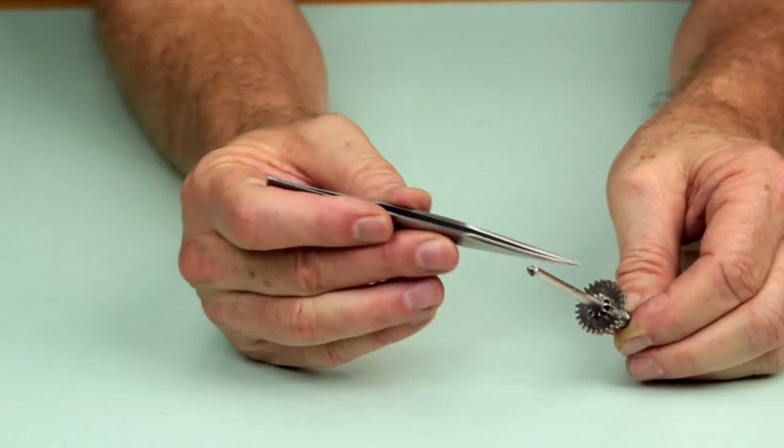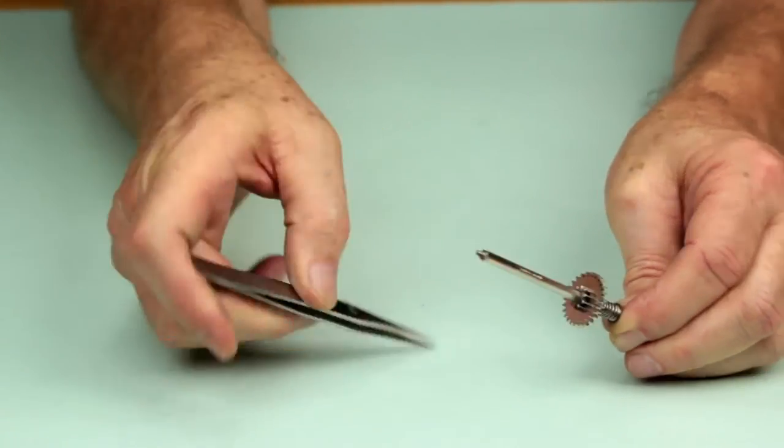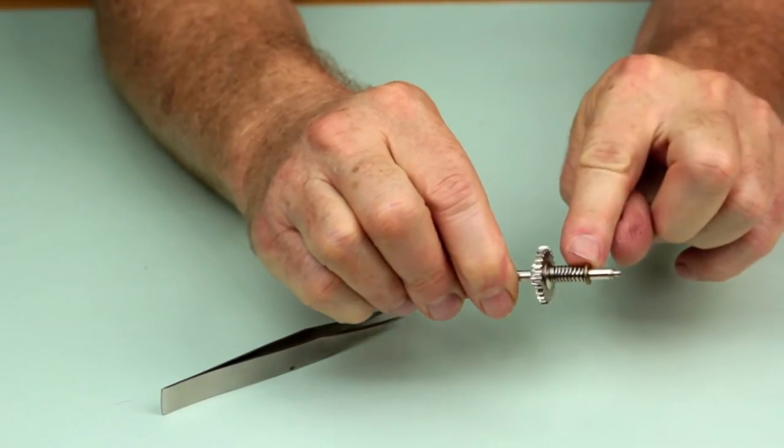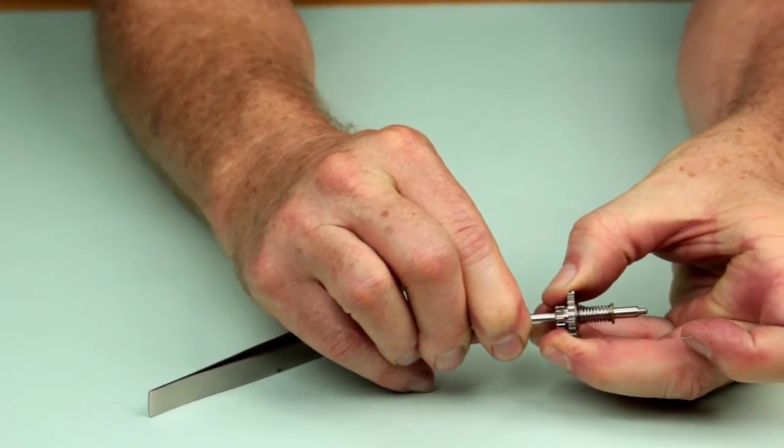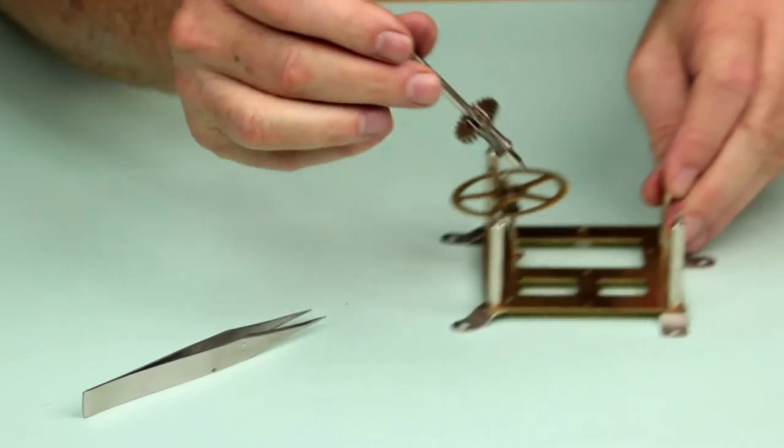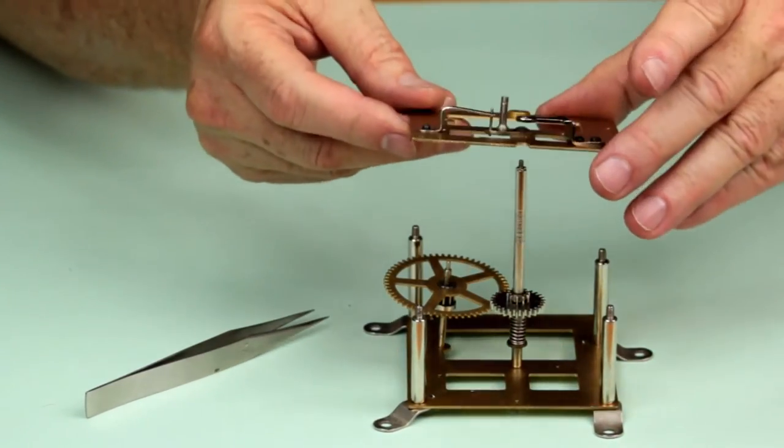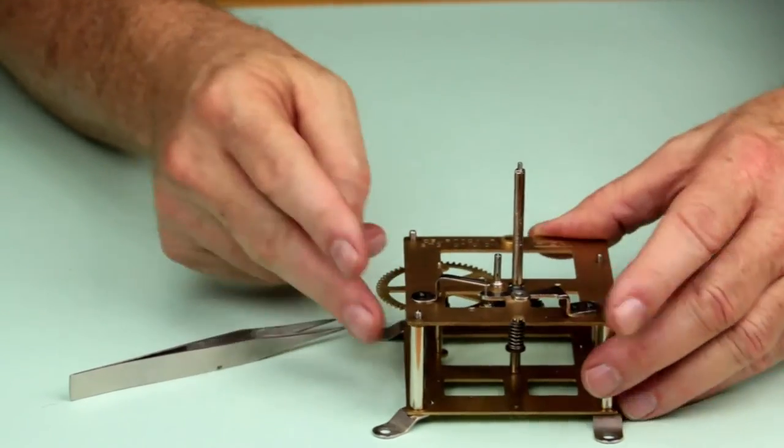In this movement, the cannon pinion is fixed to the center arbor. The center wheel is an easy slip fit on the center arbor, and this stout spring pushes the center wheel firmly against the cannon pinion, creating a friction clutch between them. Under normal conditions, this friction makes them act as though they are solidly connected together. So when the second wheel of the going train turns the center wheel, the cannon pinion and center arbor turn with it.